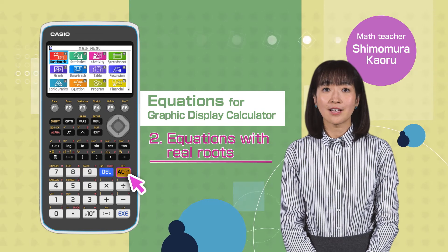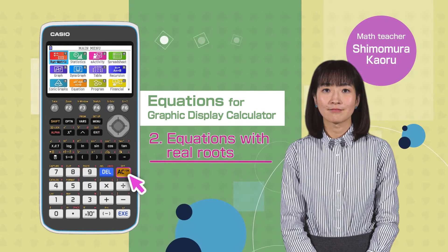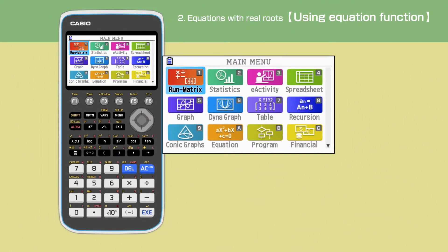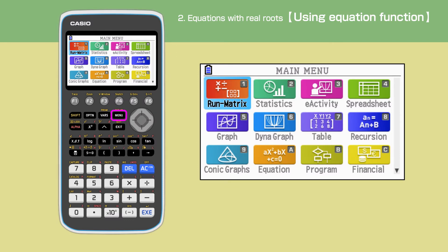Switch on your calculator by pressing the AC button. Press the menu button to open the main menu, then move the cursor, or press A to select the equation function.